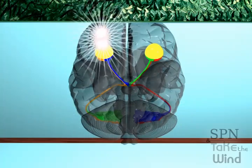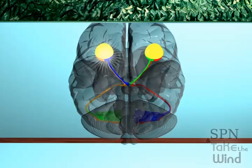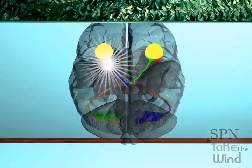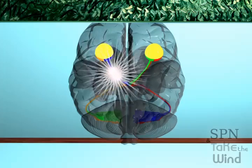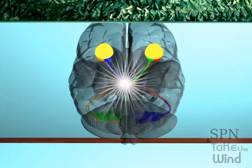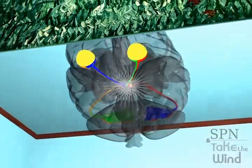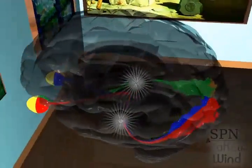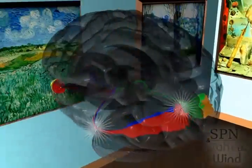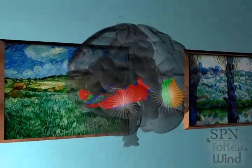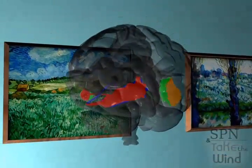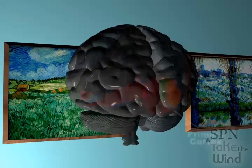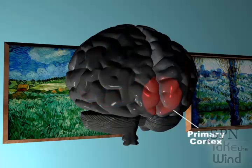Information from the temporal part of the right visual field crosses over to the left hemisphere. Information from the temporal part of the left visual field crosses over to the right hemisphere. This is called contralaterality of vision.